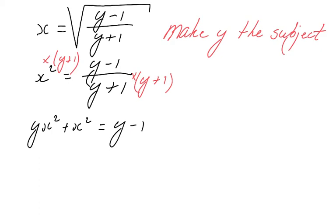Now our next step is to put all the y terms on one side of the equal sign. So I'll do that on the right side. So we're going to say y minus y x squared. So take away y x squared here. So take away on the right side.